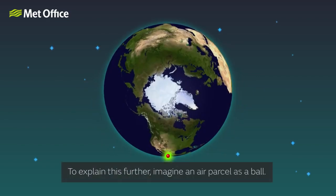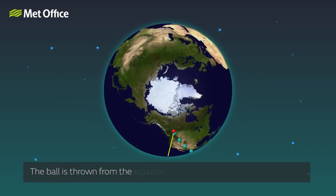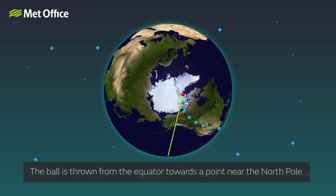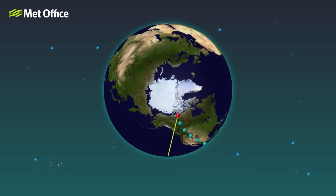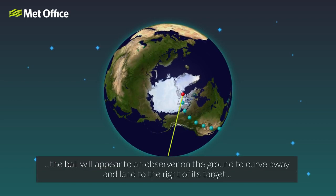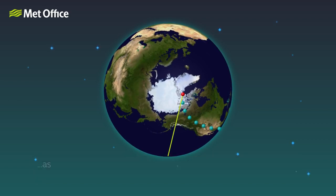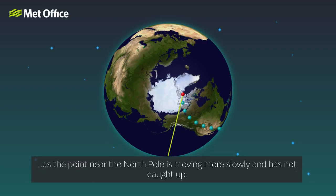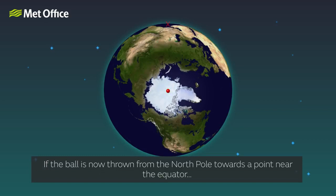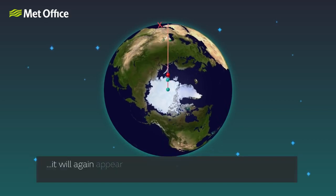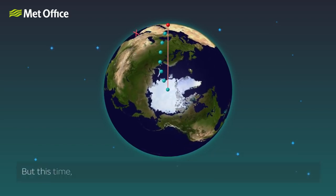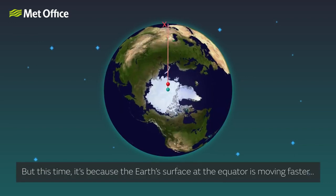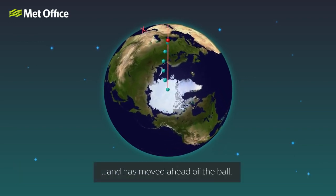To explain this further, imagine an air parcel as a ball. The ball is thrown from the equator towards a point near the North Pole. Even though it moves in a straight line, the ball will appear to an observer on the ground to curve away and land to the right of its target, as the point near the North Pole is moving more slowly and is not caught up. If the ball is now thrown from the North Pole towards a point near the equator, it will again appear to a surface observer to land to the right of its target, because the Earth's surface at the equator is moving faster and has moved ahead of the ball.